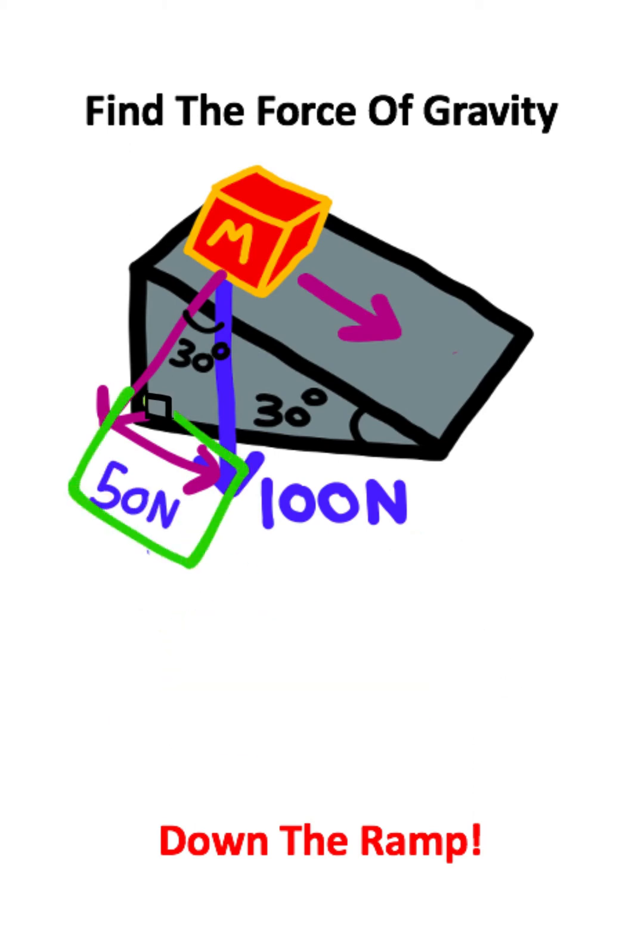And notice how this component of the weight force matches with this vector up here. So the force of gravity that pulls the box down the ramp is equal to 50 Newtons.